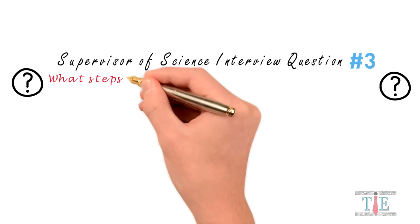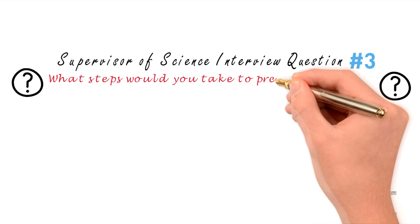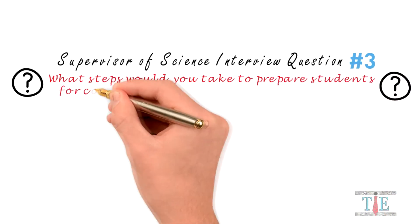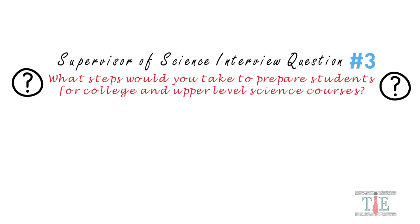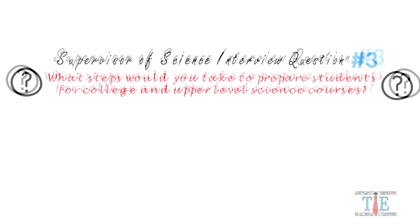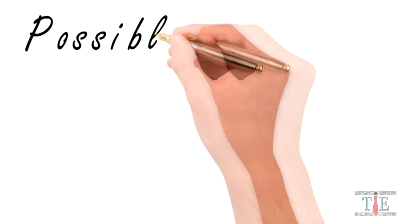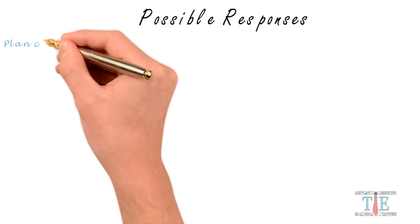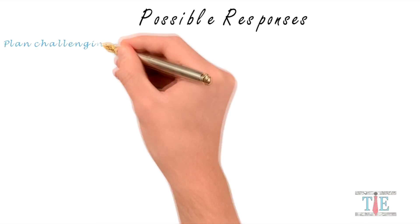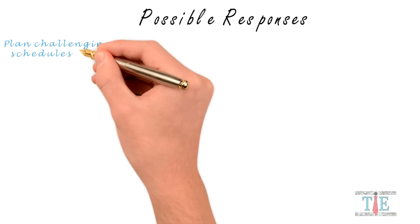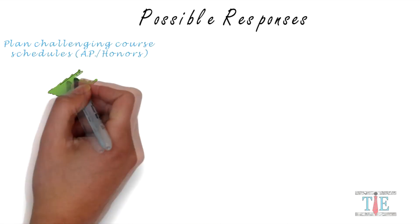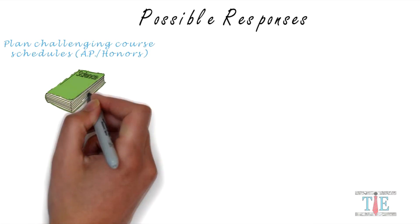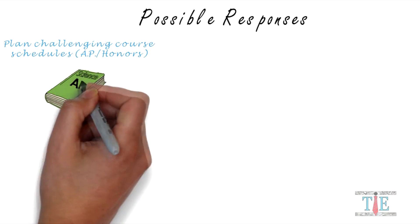Interview question number three: What steps would you take to prepare students for college and upper-level science courses? There are many acceptable answers, but here are just a few possible responses. First, plan challenging course schedules, including AP and honors courses. Be sure the right students get these opportunities, but be cautious not to put too much demand on students.